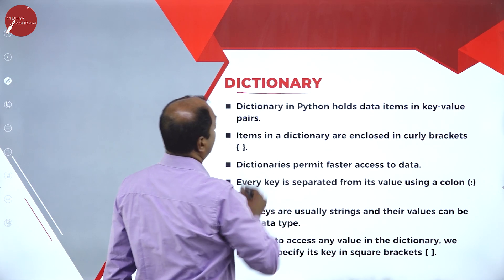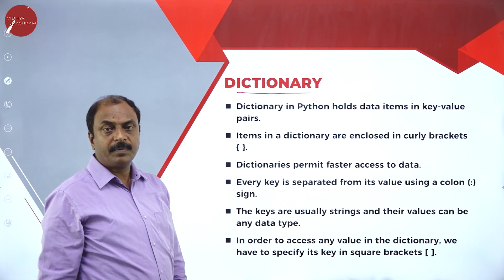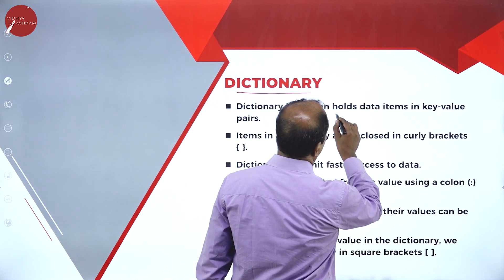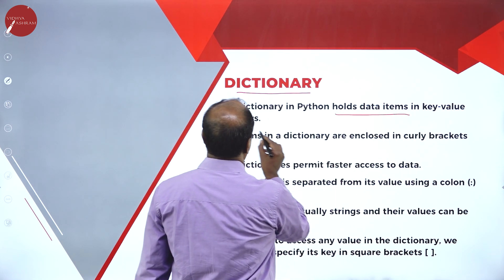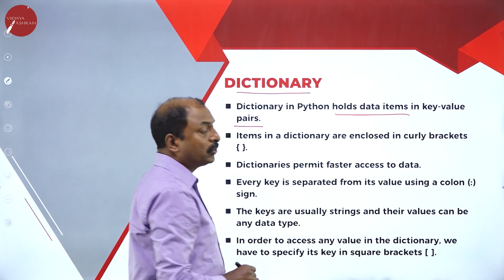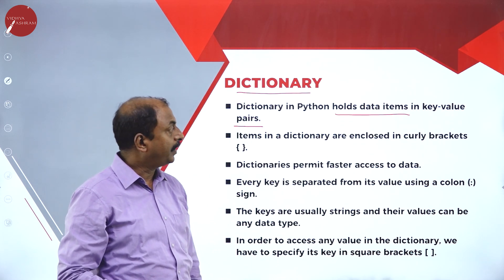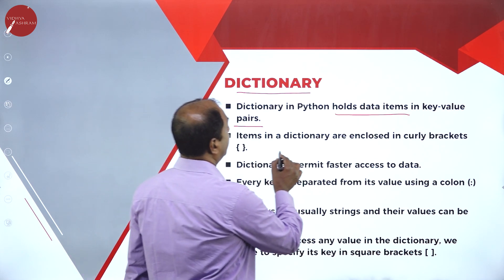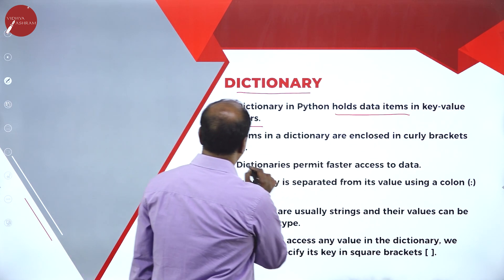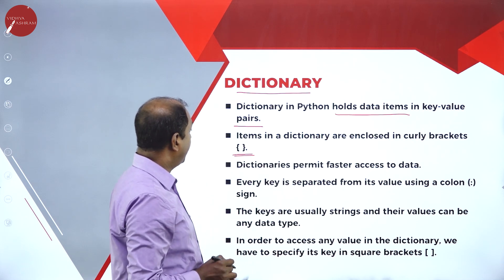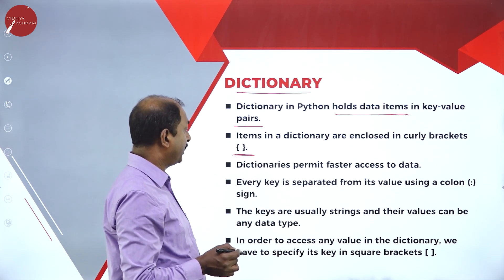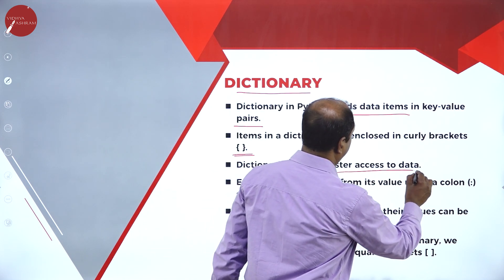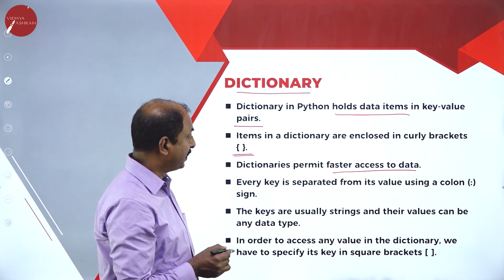Next one is dictionary. What are dictionaries in Python? In Python, the dictionary holds data items in key-value pairs — it stores a pair of values as key-value pairs. The items in a dictionary are enclosed in curly brackets, same as sets. Dictionaries permit faster access to the data, which is the advantage of using a dictionary. Every key is separated from its value using a colon sign.